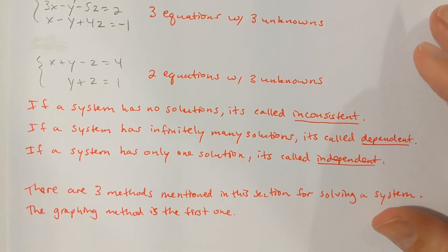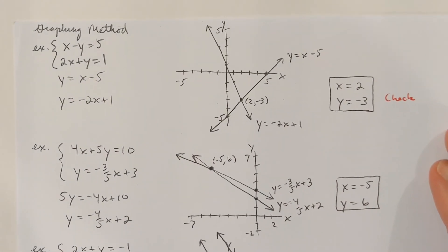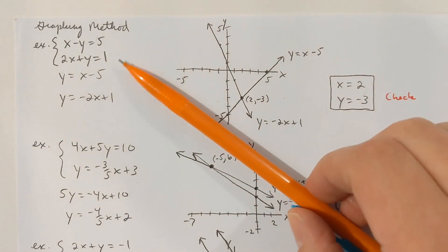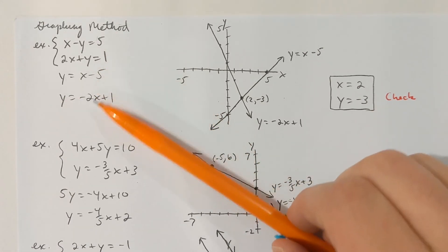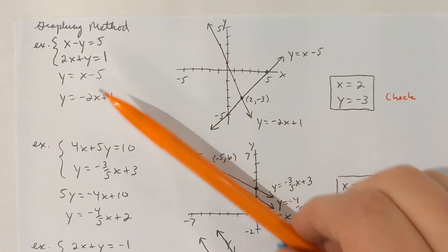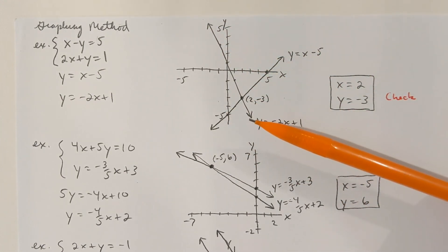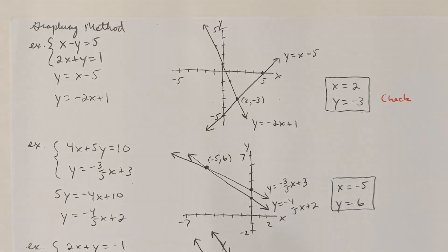There are three methods mentioned in this section for solving a system, and we'll look at another method in the next section. One method is the graphing method. We're working with lines when we have a linear system. I'm going to rewrite the equations in slope-intercept form so I can graph the two lines by working off the slope and the y-intercept. The solution with the graphing method is the point where the two lines intersect each other. It's good to be neat with the graph — you don't want to slop up a quick sketch and then have to eyeball where the lines intersect.